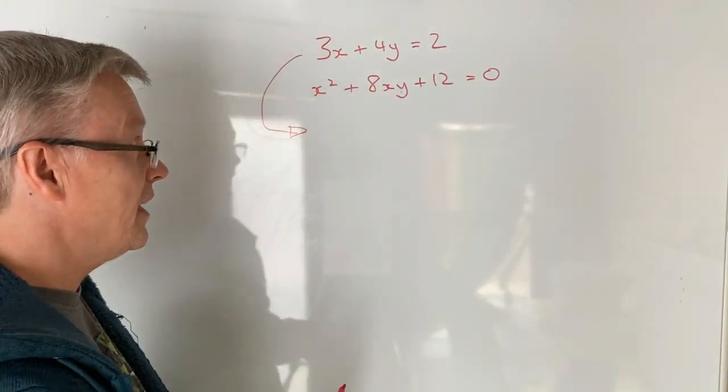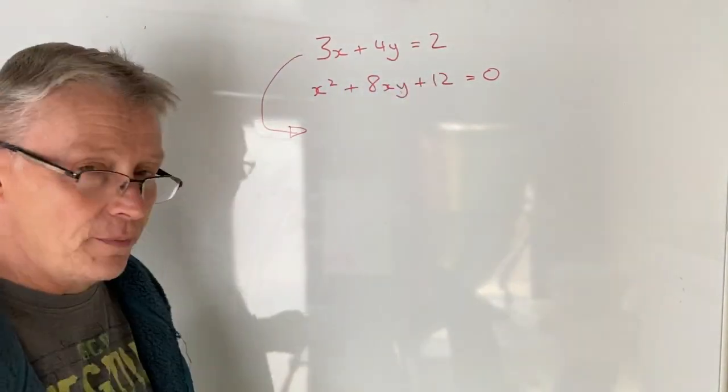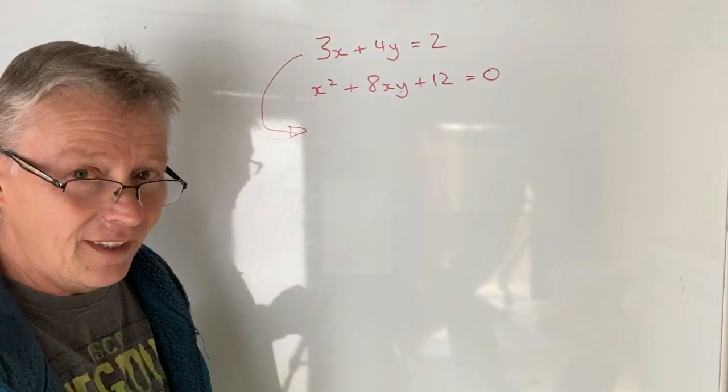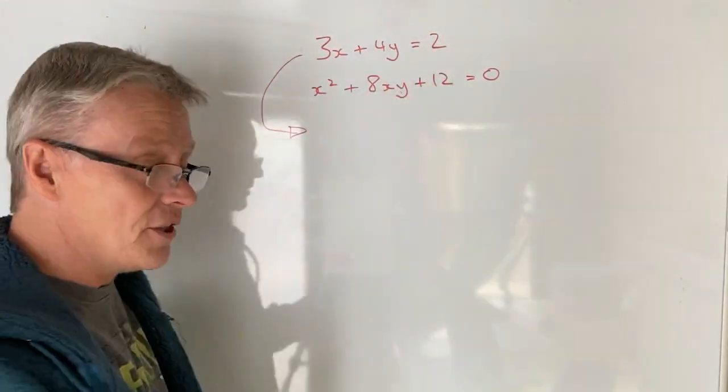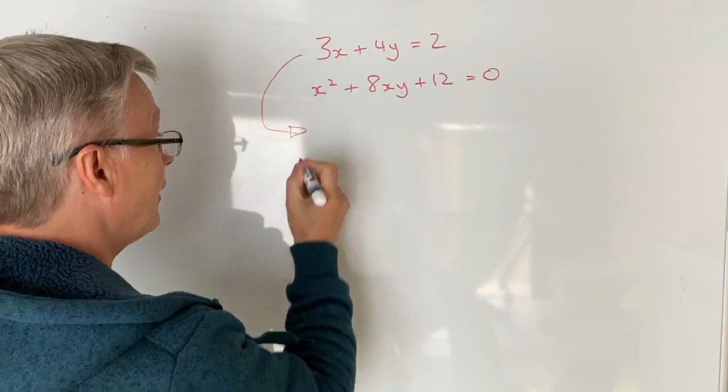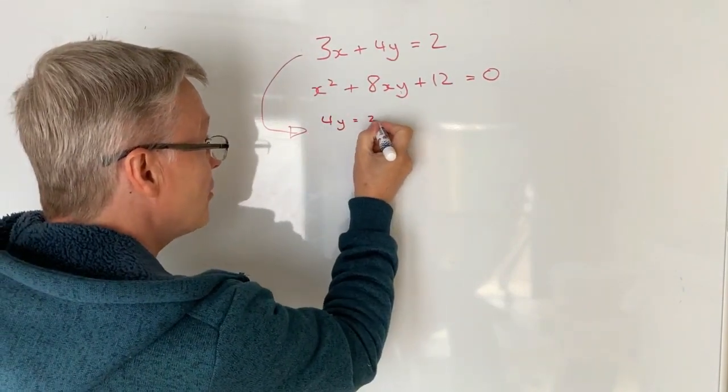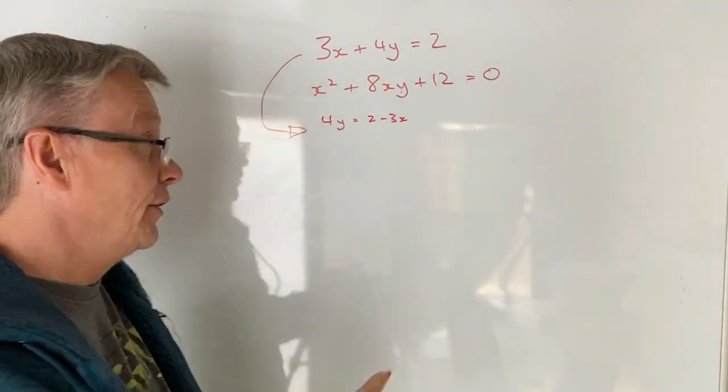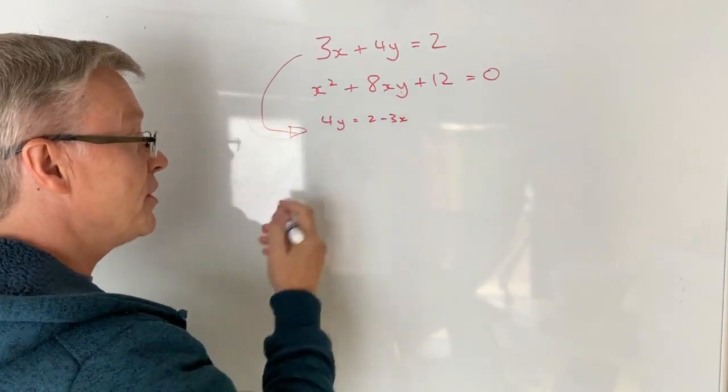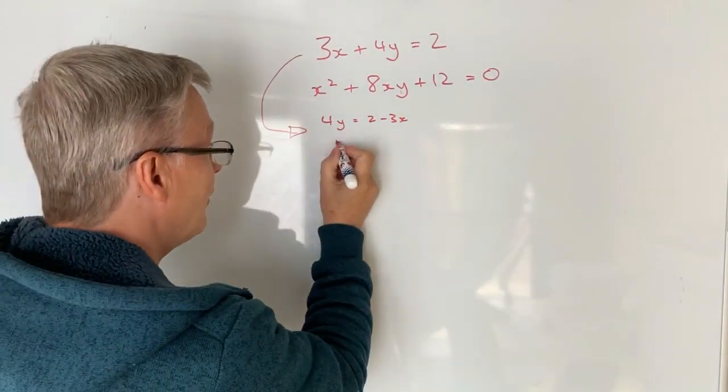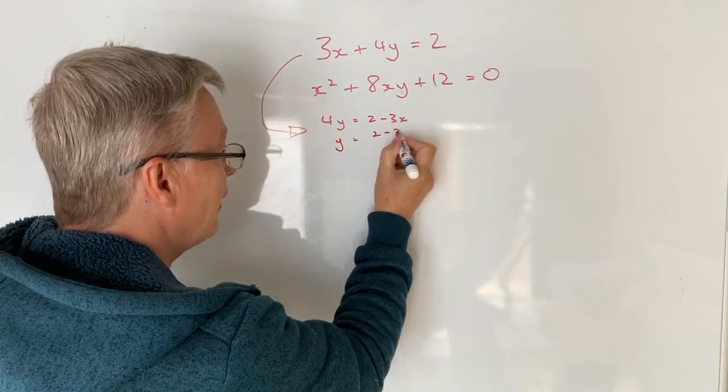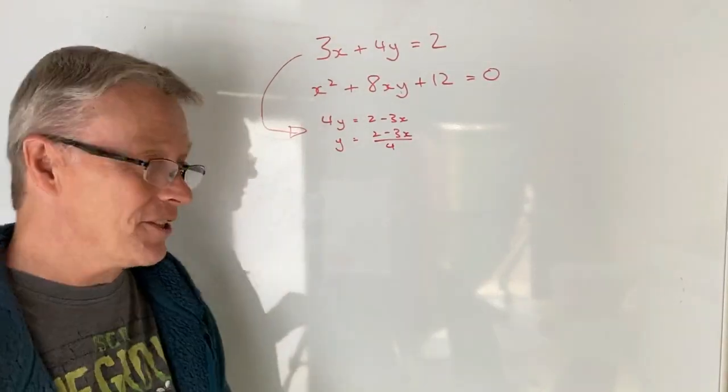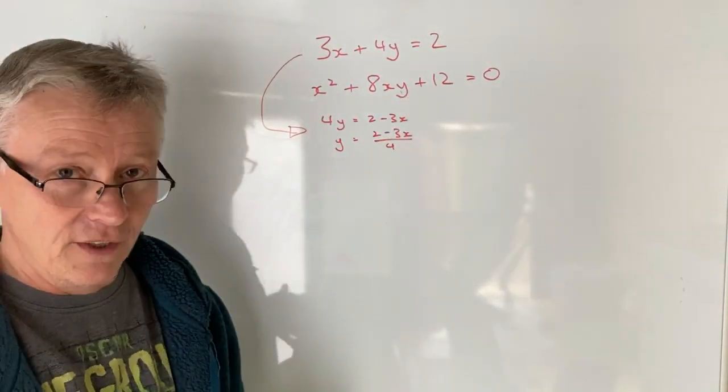So what I want to do is make y the subject of this particular formula. Now at the moment we've got 4y there so I'm just going to leave it as it is and I'm going to move the 3x over towards the right hand side. So I'm going to get 4y equals 2 minus 3x. Now I need a single value of y exactly as I've got here. So what I'm going to do is divide through by 4 and I'm going to get this fairly awful equation which is 2 minus 3x divided by 4 and it's kind of no good to me. It's going to make my life very difficult when I substitute it into here.